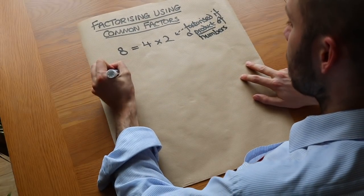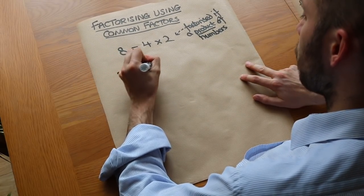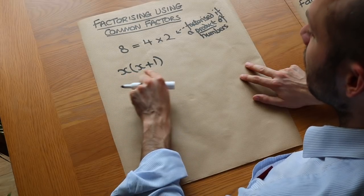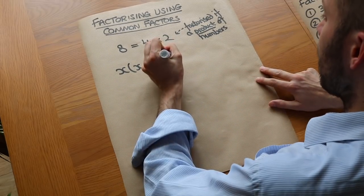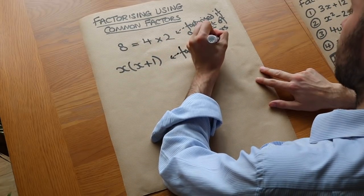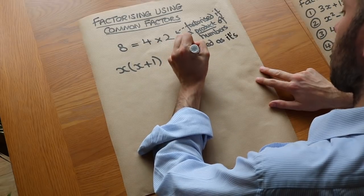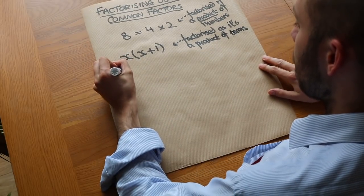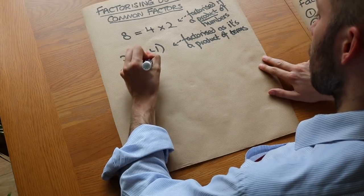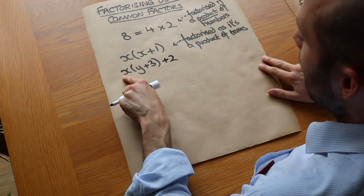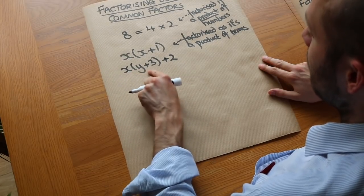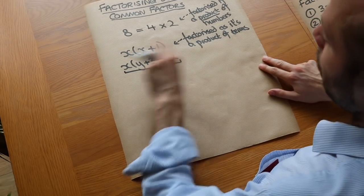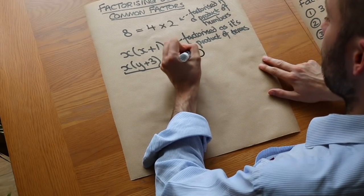The same applies in algebra. If we have X(X+1), we know this is a product of two things — X times (X+1) — and we say this is factorized as it's a product of algebraic terms. However, something like X(Y+3) + 2 is not fully factorized overall, because the whole expression is an addition. We wouldn't say that is factorized.